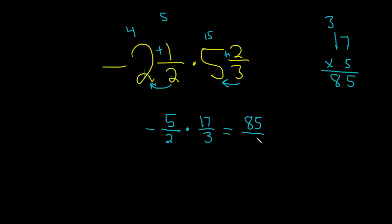On the bottom, we have 2 times 3, which is 6. And then we still have the negative sign, right? Remember, if we have one negative, the whole thing is negative. If we have two negatives, it's positive.